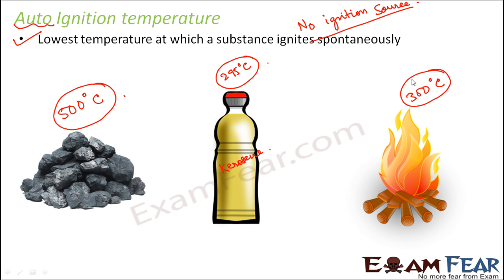Because when you are preparing food, you deal with a specific range of temperatures. When you keep the cylinder in your house, that cylinder is exposed to room temperatures. So basically you can decide whether that particular fuel will be suitable for that purpose by knowing its auto-ignition temperature and flash point.